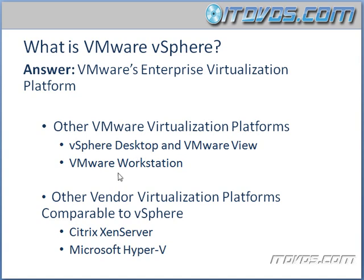Another virtualization platform from VMware is VMware Workstation. VMware Workstation is kind of like what we used to use where we'd have a desktop running Windows 7, and we want to run a virtual machine on that desktop and configure it. We can run VMware Workstation on that Windows 7 desktop and that will allow us to run a virtual machine on that desktop.